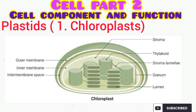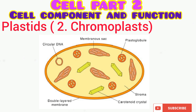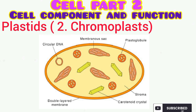The chromoplasts are plastids that lack chlorophyll. They possess carotenoid pigments responsible for the various colors they impart on fruits, flowers, and other parts of plants — the color may be yellow, red, or orange. They play a role in pollination and dispersion of plants.